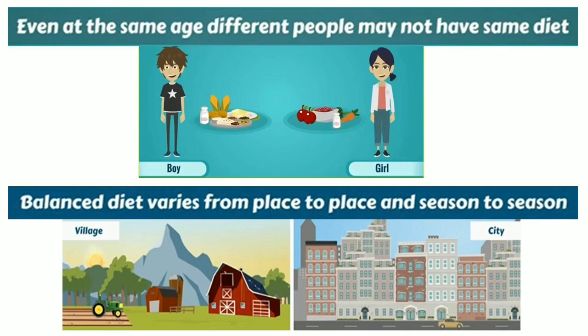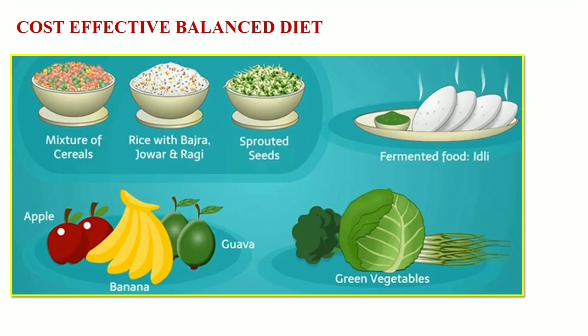Even at the same age, different people may not have the same diet. A boy's diet at a particular age is different than the girl's diet. In fact, balanced diet varies from season to season and place to place. For example, a balanced diet of a person living in a village is different from the balanced diet of a person living in a city. For balanced diet, it is not necessary to have expensive food materials — simple meals can also serve the purpose.